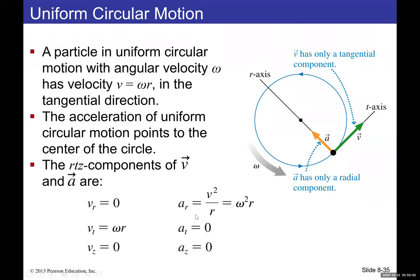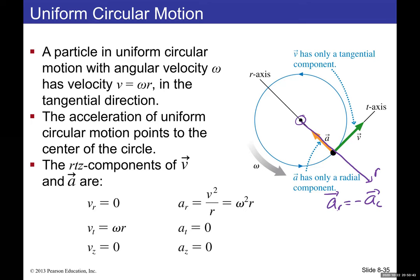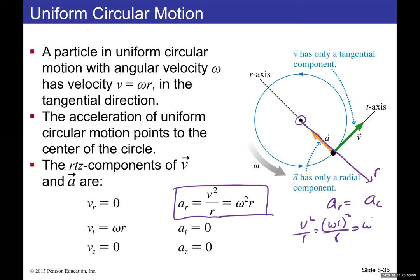For a particle in circular motion, radial and centripetal accelerations are essentially the same thing. As a vector, centripetal acceleration equals negative a_r (pointing opposite the radial axis). Their magnitudes are equal: v² / r, or equivalently ω² · r, since v = ωr.